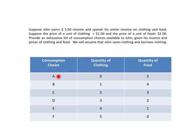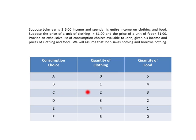This table contains consumption choices available to John given his income and prices. Focus on consumption choice A: suppose John decides to buy no clothing — the maximum amount of food he can buy is five units. Consumption choice B: suppose John purchases one unit of clothing, spending one dollar, leaving four dollars, so he can buy a maximum of four units of food. Consumption choice C: two units of clothing costs two dollars, leaving three dollars for three units of food.